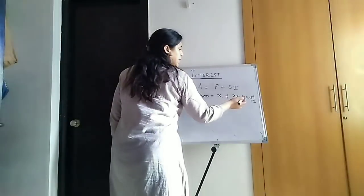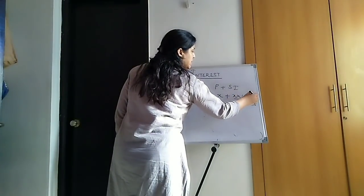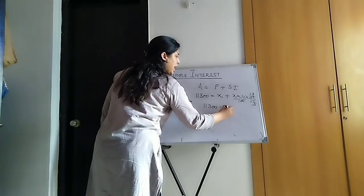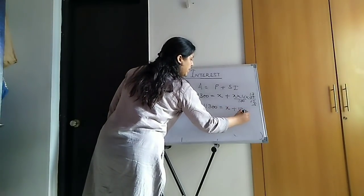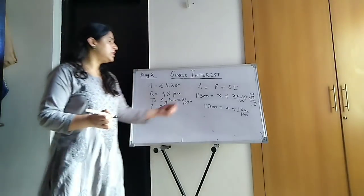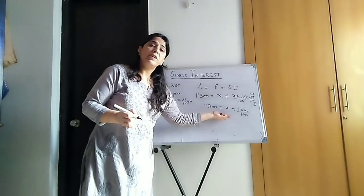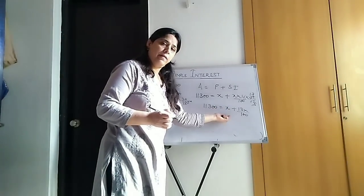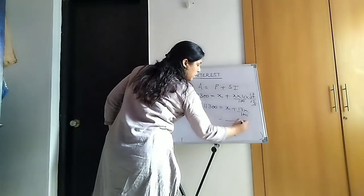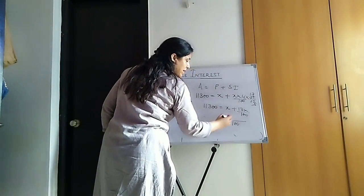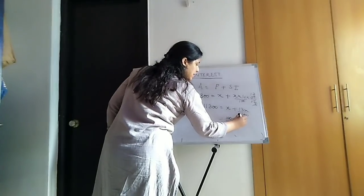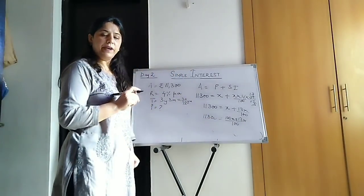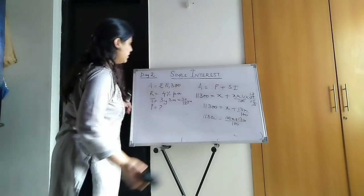Now let us calculate this. 4 ones are 4, 4 threes are 12. 3 ones are 3, 3 threes are 9. So you get 11300 is equal to X plus 13X upon 100. Now this X doesn't have the denominator as 100. So we need to take the LCM. The denominator is 1, so the LCM will be 100. So you need to multiply this by 100. So 100X plus 13X is equal to 11300. 100X plus 13X is equal to 113X. I hope this is clear, children.